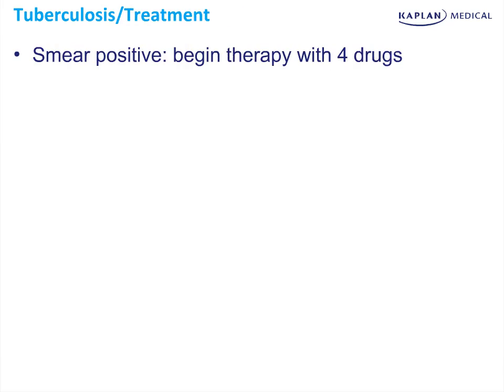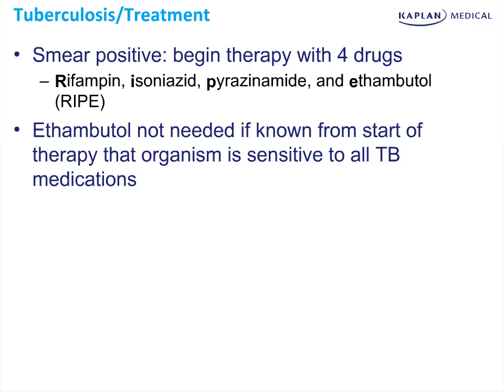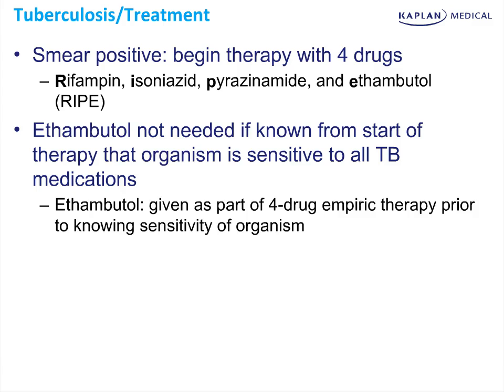Regarding the management of tuberculosis, once you have a positive smear, you should begin therapy with a four-drug regimen. This includes rifampin, isoniazid, pyrazinamide, and ethambutol, which you can memorize through the acronym RIPE. Ethambutol is not needed if it's known from the start of therapy that the organism is sensitive to all TB medications, because ethambutol is given prior to knowing sensitivity and helps with organisms resistant to certain anti-TB therapy.